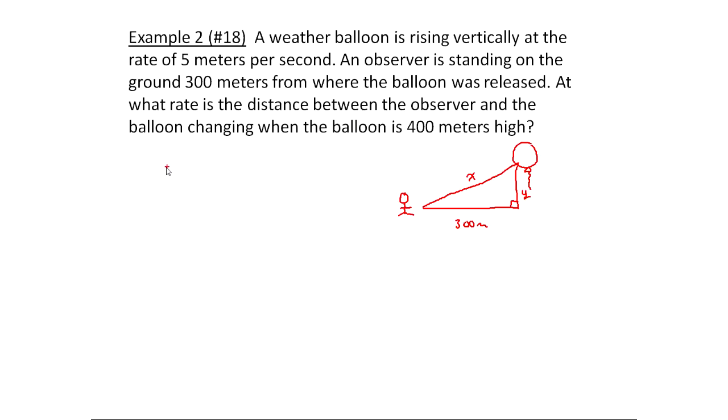So going back through, what do we have? A weather balloon is rising vertically at the rate of 5 meters per second. Rising, that would be what we called Y. So the rate of change with respect to time for Y, dy/dt, is 5. It's positive 5 because it's going up. The observer's standing 300 feet away. We got that. At what rate is the distance between the observer - that's X - changing? So we want to know what is dx/dt when Y, because Y is the height of the balloon, is 400. This is the problem set up.